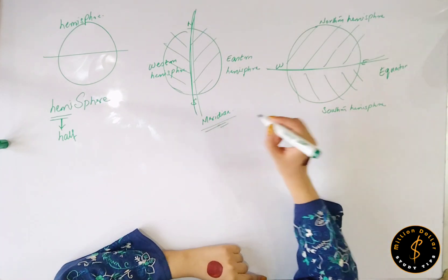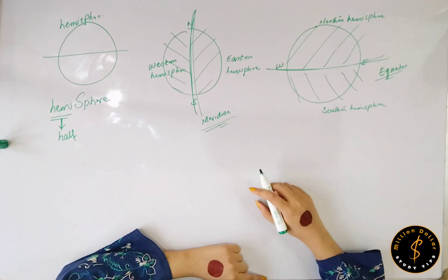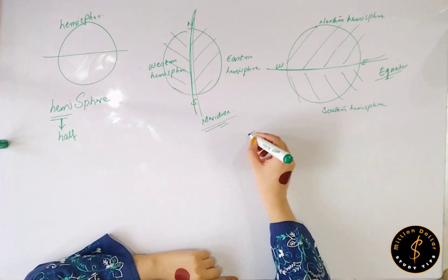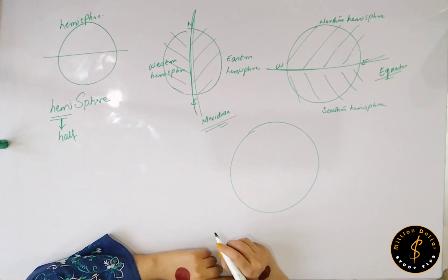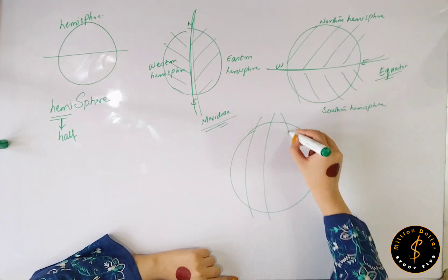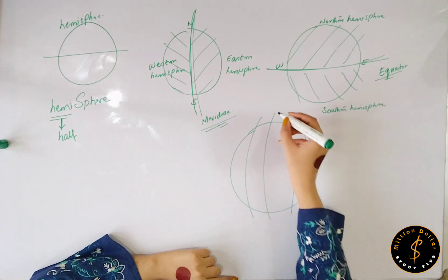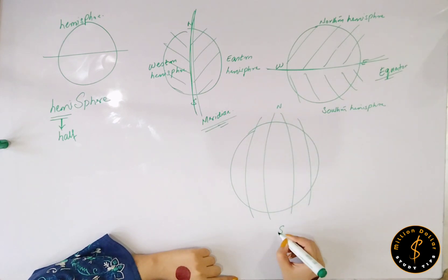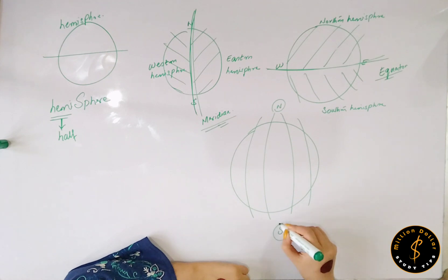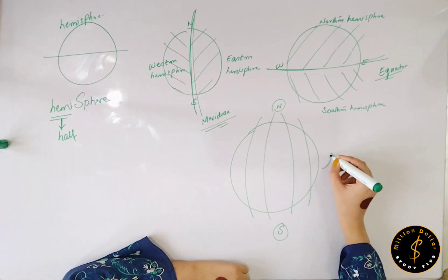Well, this is meridian and this is equator. Now on Earth we draw some imaginary lines, like this. The lines we draw from north to south are known as longitudinal lines.